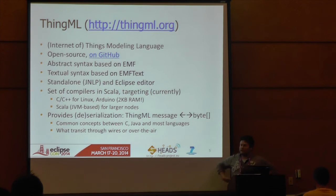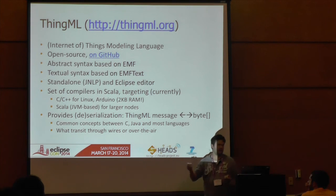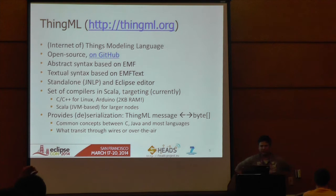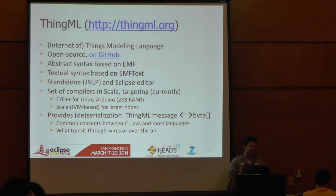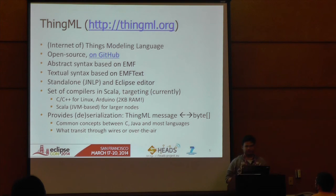For bigger nodes, we are currently targeting the Scala language — which is essentially Java. We also provide some nice features: a message defined in ThingML can be transformed into an array of bytes, providing interoperability between Java, C, and most languages that define a concept of arrays of bytes. This also provides support for connectivity, because whether you're dealing with serial communication over USB or over-the-air via Bluetooth or ZigBee, you ultimately send and receive arrays of bytes — enabling portability across different languages.